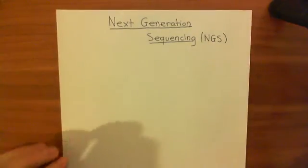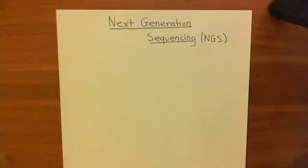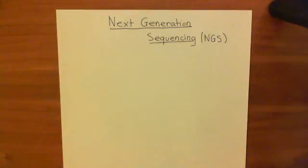The task is still the same: to sequence the DNA on chromosomes 1 through 23. Next-generation sequencing cannot sequence an entire chromosome in one go — some of them are over 100 million base pairs. So you cannot sequence one of those all in one go.